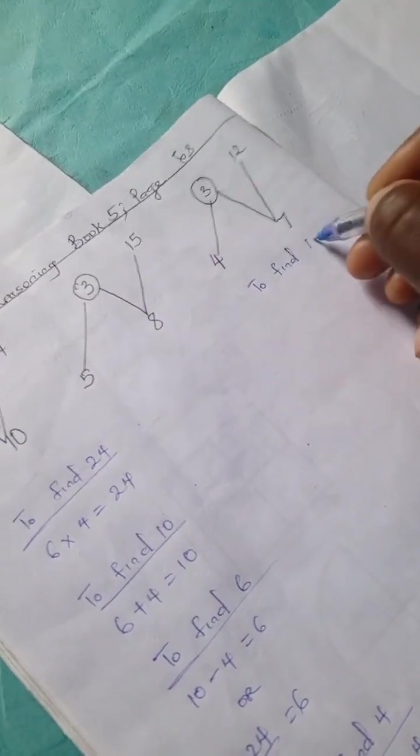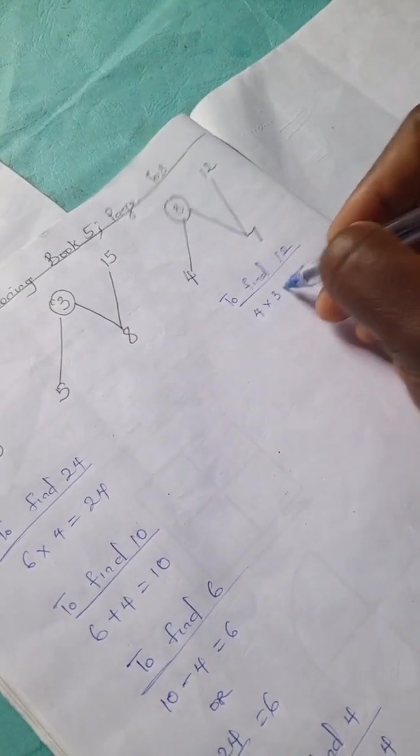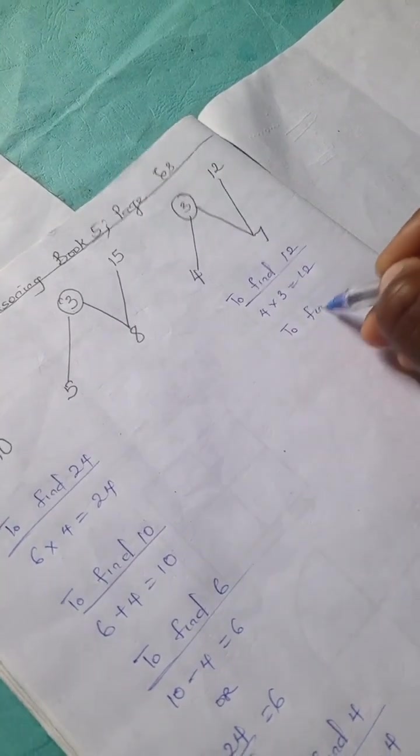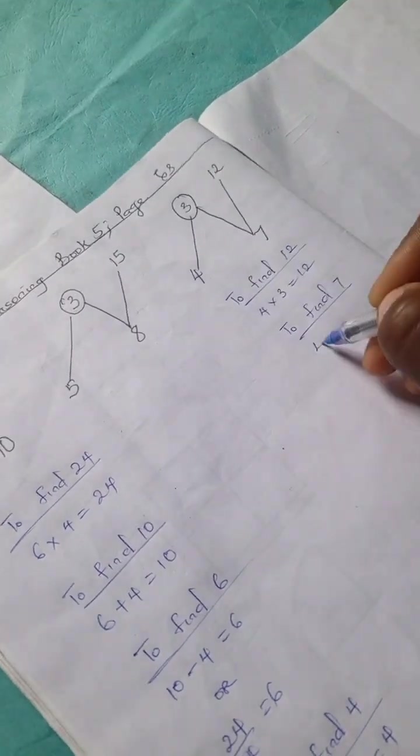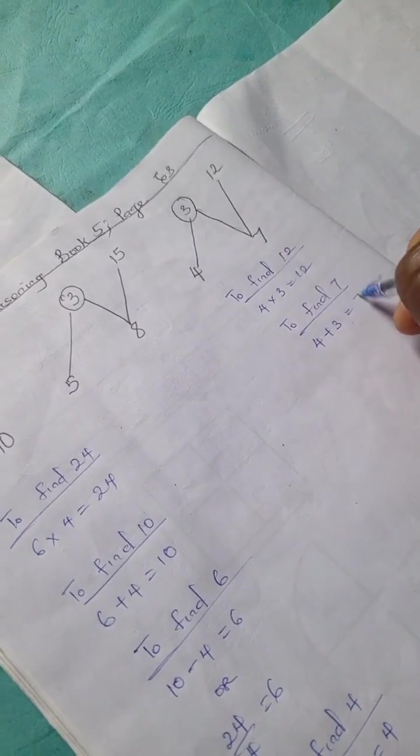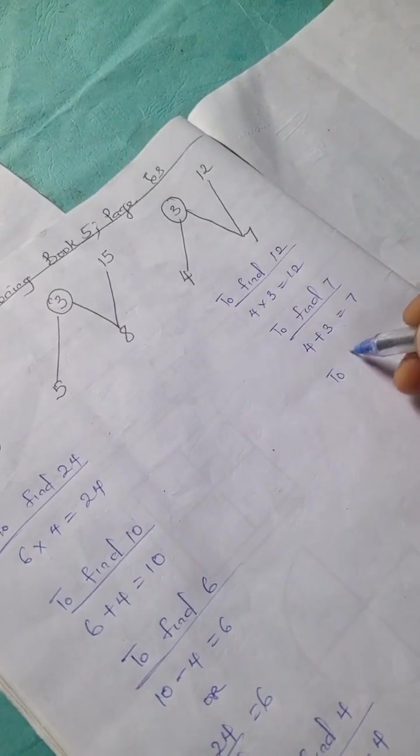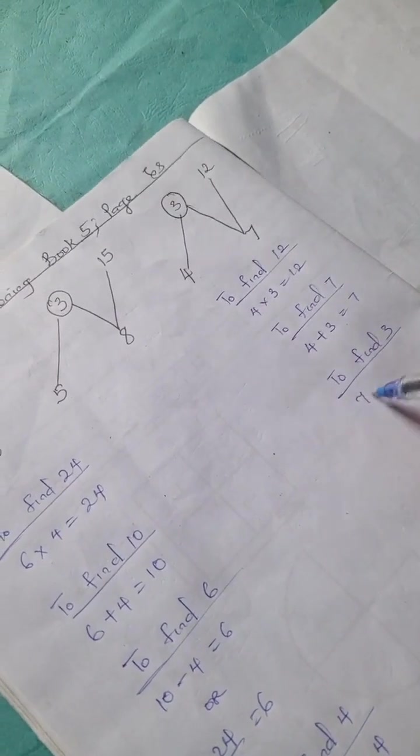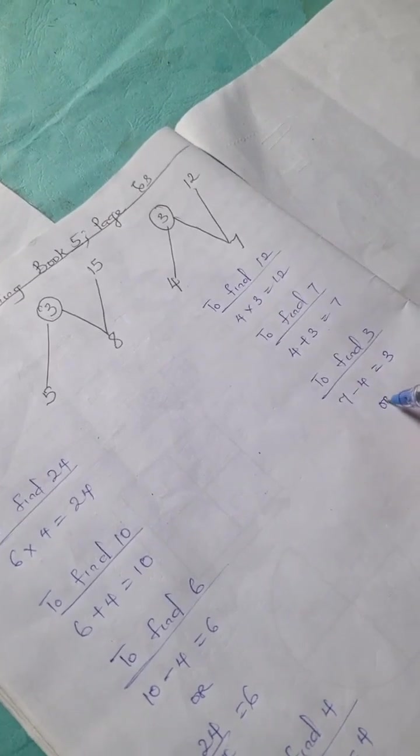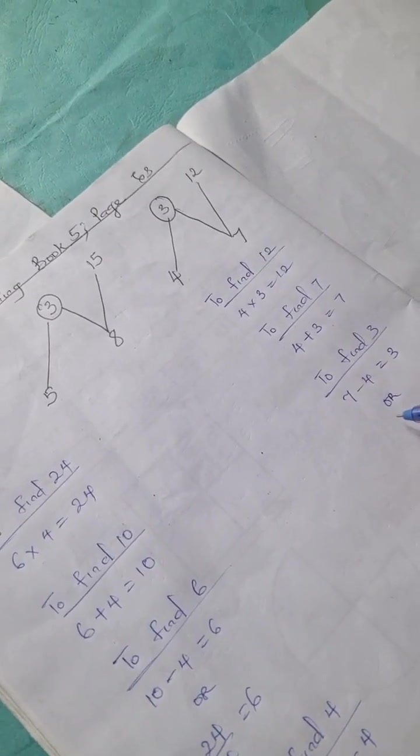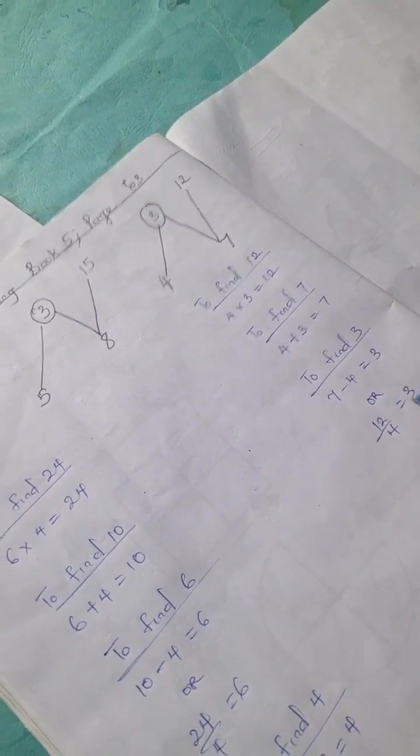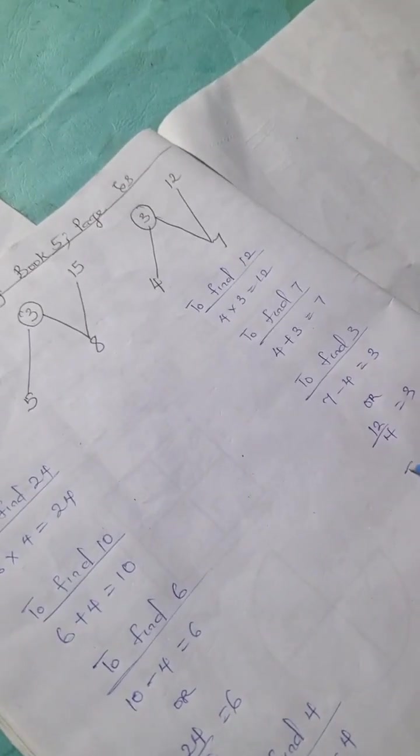To find 12, we have 4 times 3 is 12. And to find 7, we have 4 plus 3 is 7. So to find 3, we can say 7 minus 4 is 3 or we can have 12 divided by 4 is 3.